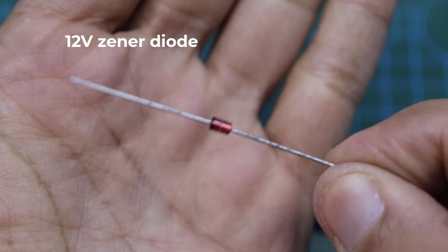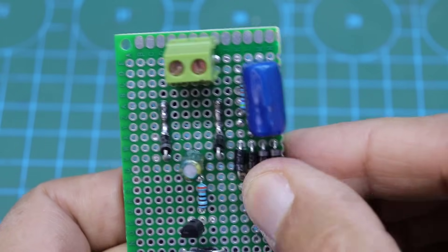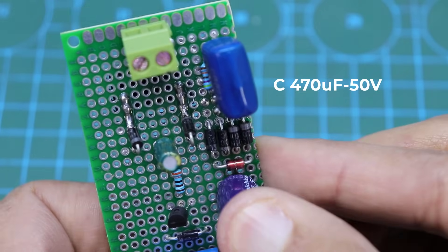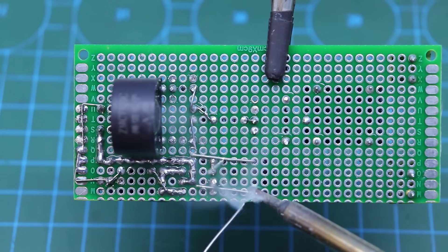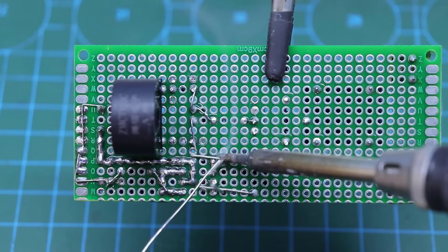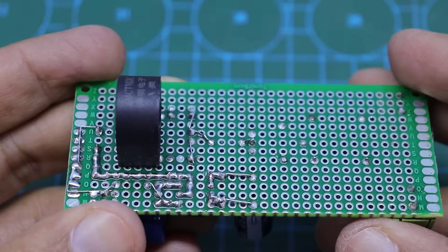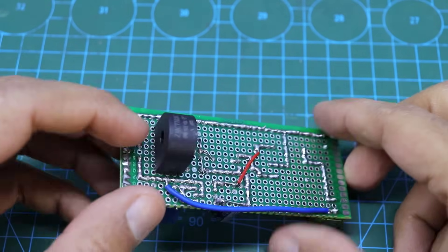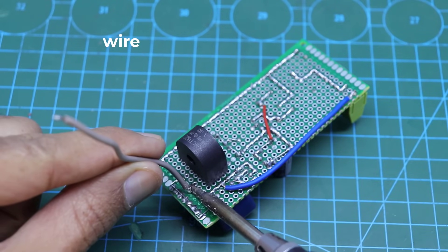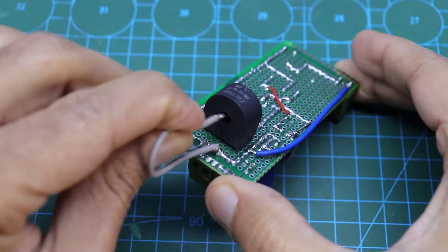Resistor 3.4 Kilo. Transistor BC547. Diode 1N4007. Zener Diode 12V. Capacitor 470μF.